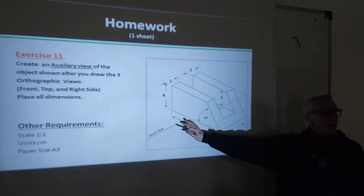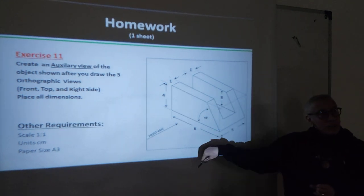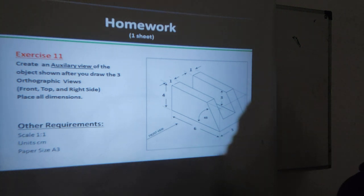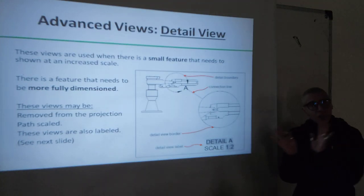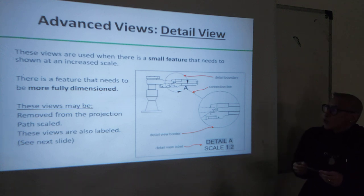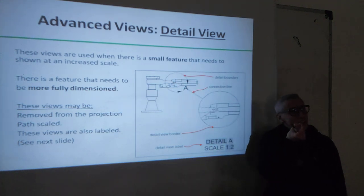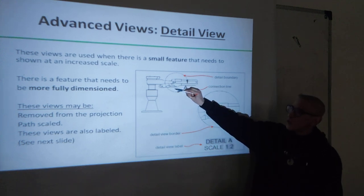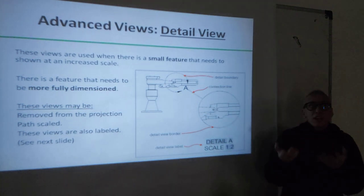Auxiliary views are actually very simple if you understand the idea. Now I will discuss something else today - detail views. This is another topic. Auxiliary view is one thing, detail view is something else. Sometimes in orthographic drawings we need to show detail views. These are used when you're drawing an object and it has a lot of small details which are very difficult to put measurements on - they are not very clear because they're so small. Sometimes a detail view is drawn.